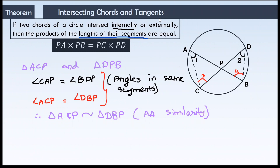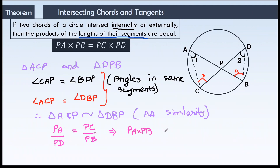So here the corresponding sides are proportional: PA from the first triangle corresponds to PD in the second triangle; PC as one side in the first triangle corresponds to PB in the other triangle. If we cross-multiply this proportionality, we get PA into PB equals PC into PD. Thus the product of the lengths of the segments of the chords are equal when two chords intersect internally in a circle.